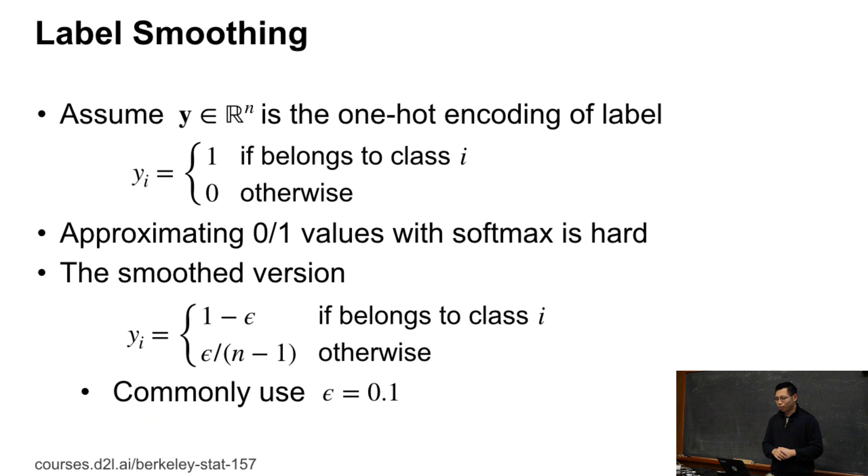The second one is called label smoothing. We know that we also use a one-hot encoding for the label. The y is just the n-dimensional vector, n is the number of classes we have. If this yi belongs to class i, yi equals to 1, all the other things equal to 0. We know that we are approximating all this one-hot encoding using the softmax. Softmax is pretty hard to approach 0 or 1.